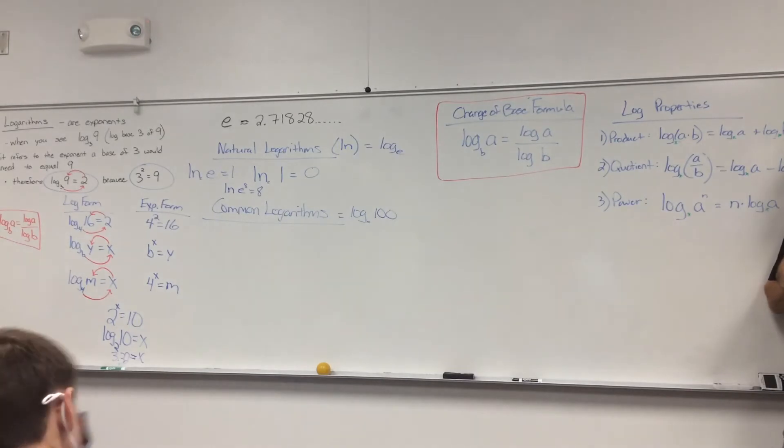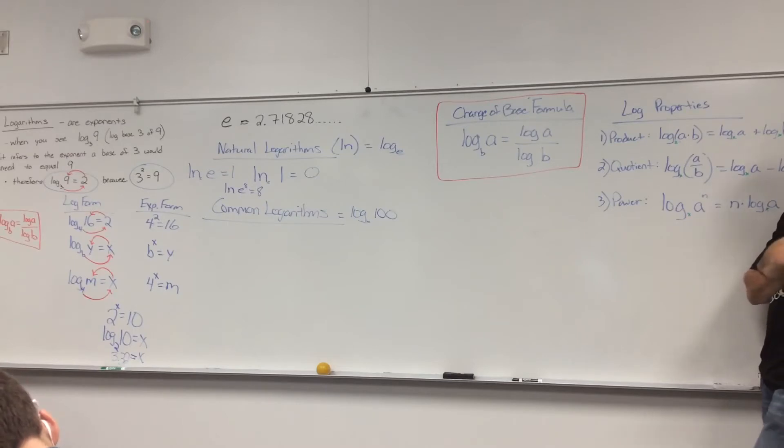E was discovered, I believe, by a guy named Bernoulli. He was messing with compound interest. And then it ended up showing up in a lot of other places, but I think it was first discovered when he was messing with compound interest.